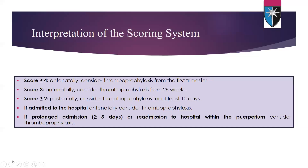If you consider thromboprophylaxis from 28 weeks, that's a score of two for ten days. If admitted to hospital antenatally, consider thromboprophylaxis; and if there is prolonged admission for more than three days or readmission to hospital within the puerperium, we have to consider thromboprophylaxis.